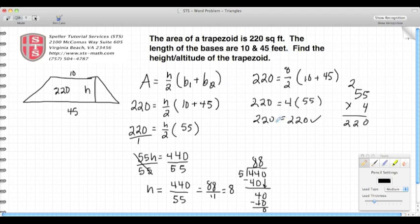So a trapezoid with the area of 220 square feet that has bases of length 10 feet and 45 feet has a height of 8 feet, as we've shown here. Thanks again for watching this video.